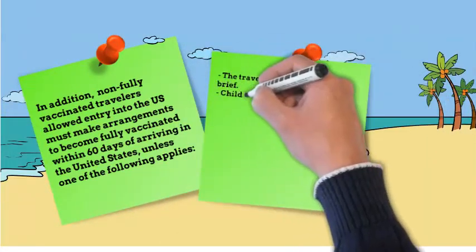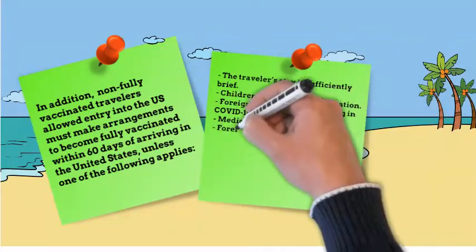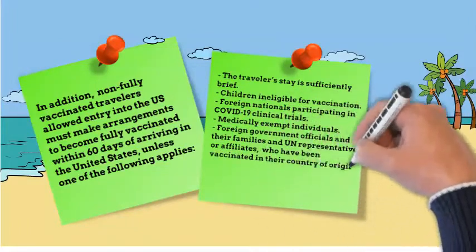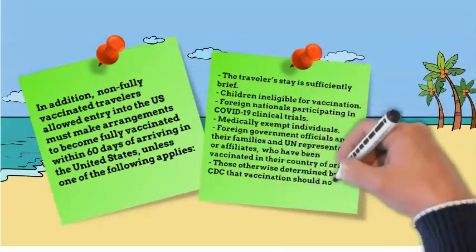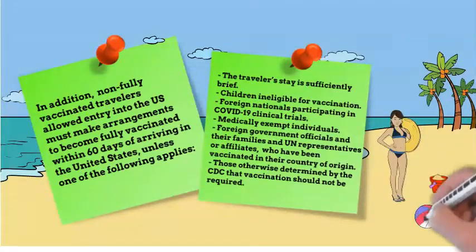The traveler's stay is sufficiently brief. Children ineligible for vaccination. Foreign nationals participating in COVID-19 clinical trials. Medically exempt individuals. Foreign government officials and their families and UN representatives or affiliates who have been vaccinated in their country of origin. Those otherwise determined by the CDC that vaccination should not be required.